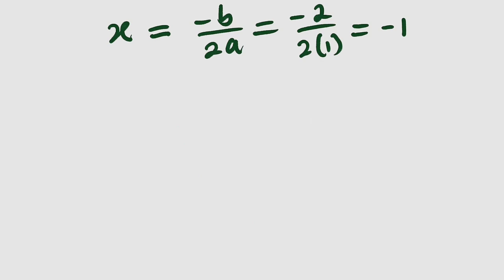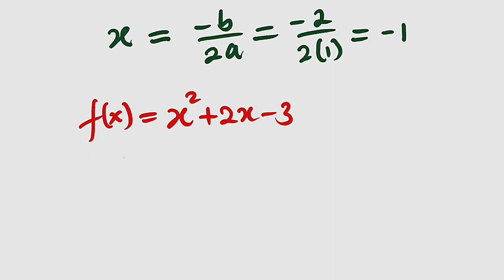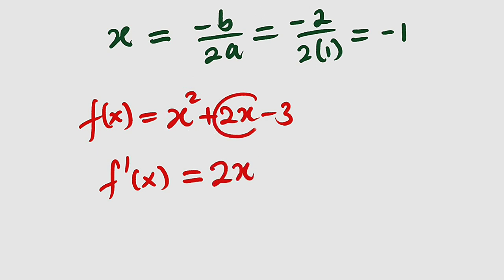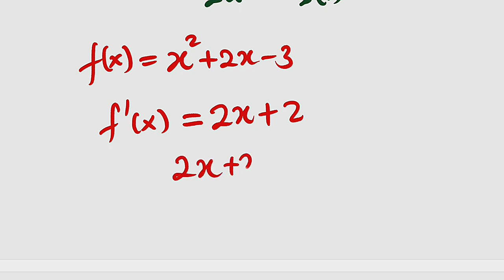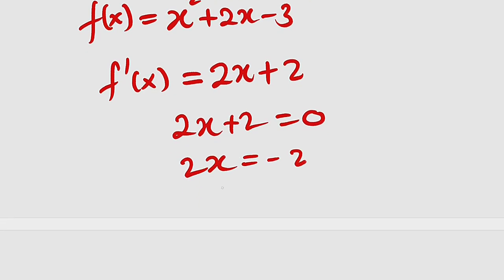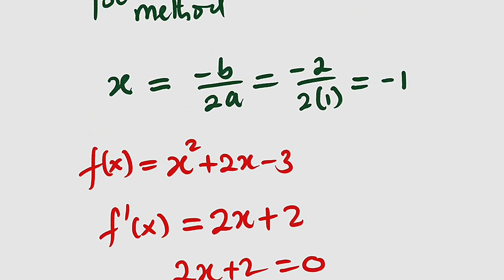We can differentiate that function and set it equal to 0. Our function is f(x) = x² + 2x − 3. If we differentiate this function, f′(x) equals the derivative of x² which gives us 2x, and the derivative of 2x gives us 2, so f′(x) = 2x + 2. The derivative of a constant is 0. Setting this equal to 0: 2x + 2 = 0, so 2x = −2. Dividing both sides by 2, we get x = −1. So we obtain x = −1 at that point.